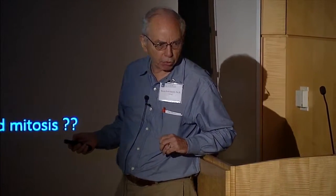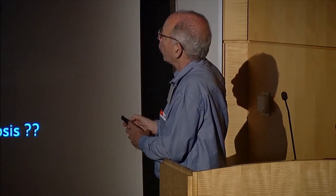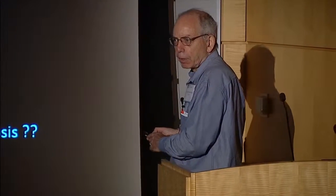A few years later, Susan Dutcher came along and did an audacious and completely unexpected experiment. Her article was called "Transfer of Genetic Information Between Strains of Saccharomyces cerevisiae," and she built on this possibility of crossing a KAR1 mutant and a wild-type cell. We can refer to one of these cells as the cis and the other as the trans cell. The method that was the outcome of her work is now the standard method for transferring chromosomes or YACs from one yeast cell to another, and her work pointed clearly to the fact that what got transferred was intact chromosomes.